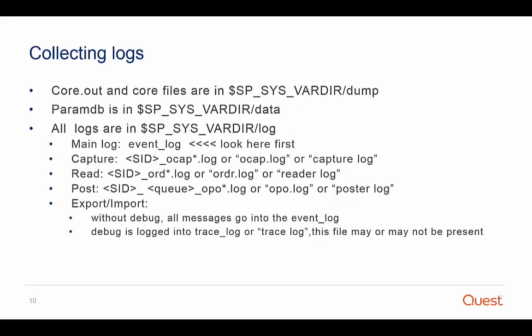The naming convention is as follows. For capture, the log is named OCAP.log and its full name includes the source SID and a counter. For read, the log is named ReaderLog or RDR.log and its full name includes the source SID and a counter. The post log is often referred to as the OPO log or poster log, and its full name includes the source SID, the queue name, and a counter. The export and import processes do not have their own logs — instead, their information is logged into the event log.